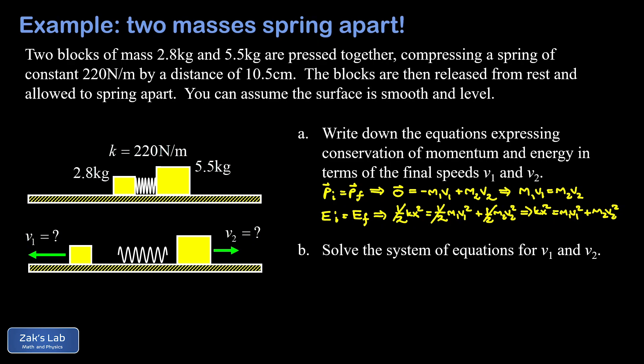In part b, we're asked to solve this system of equations for v1 and v2. What I'm advocating for high school and life science physics students is to go ahead and put the numbers in early because it makes the algebra easier. My first equation becomes 2.8·v1 equals 5.5·v2. My second equation: k times x² is 220 times 0.105², which equals 2.8·v1² plus 5.5·v2².